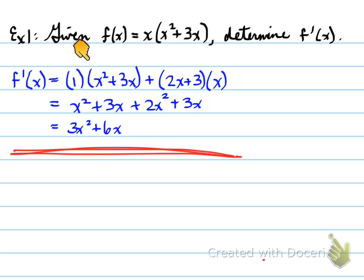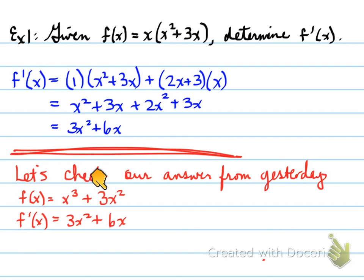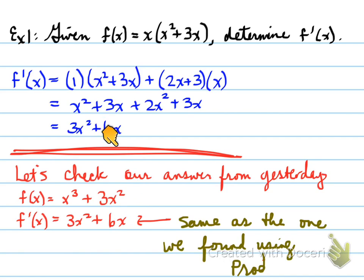1 times all of the second stays as is, and then 2x plus 3 times x. Collect those like terms. Yesterday you would have expanded f of x to get x cubed plus 3x squared, then taken the derivative to get 3x squared plus 6x. Your answers are both the same — whether we use the product rule or expand to find our answer, you will get the same result. The goal is to use multiple types of derivatives to get the right answer.